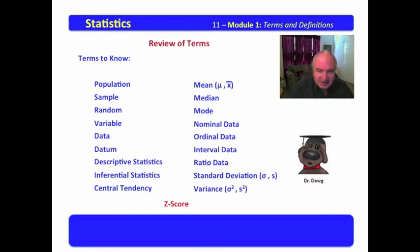One final surprise term. Z-score. The Z-score is the number of standard deviations which an individual datum lies from the mean.